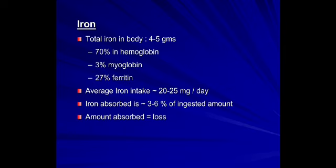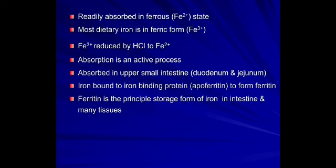Total iron in the body is 4–5 grams: 70% in hemoglobin, 3% in myoglobin, and 27% in ferritin. Average iron intake is 20–25 mg per day, of which only 3–6% is absorbed — and the amount absorbed equals the amount lost, a characteristic feature of iron metabolism. Iron is readily absorbed in the ferrous state, but most dietary iron is in the ferric form and is reduced by HCl to the ferrous state.